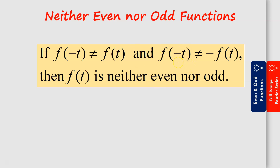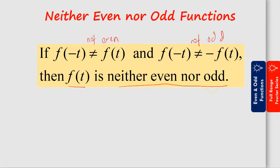We have one more term which is neither even nor odd function, meaning that both conditions are not fulfilled. Here, if our function f(-t) is not equal to f(t), and also f(-t) is not equal to negative f(t), then the function is neither even nor odd. It does not fulfill these two conditions, so we say f(t) is neither even nor odd.